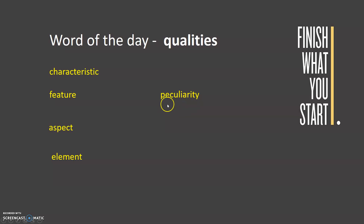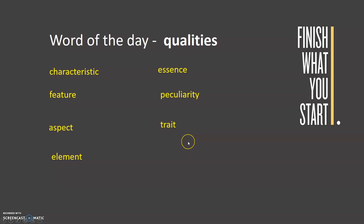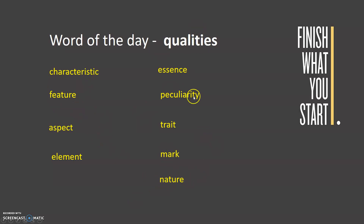'Peculiarities' means to be more specific. 'Sense' — this is like the particular thing is closely attached to that thing. 'Trait' again means qualities. 'Mark' and 'nature' are also synonyms — so these words can be used to replace qualities.